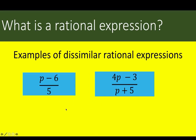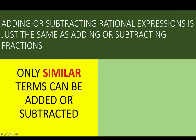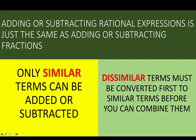When the denominators are different — for example, a denominator of 5 and a denominator of p plus 5 — since they are different, we say that these are dissimilar rational expressions. Just like in adding fractions, we can only add or subtract rational expressions when they are similar.